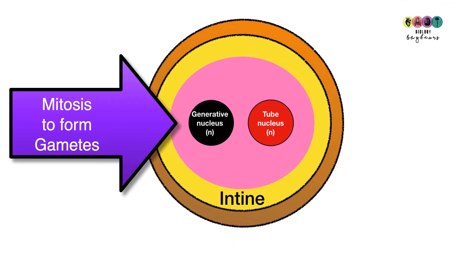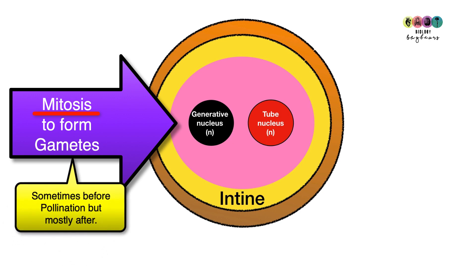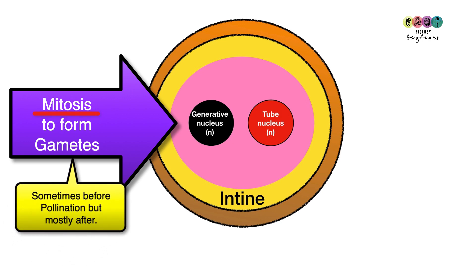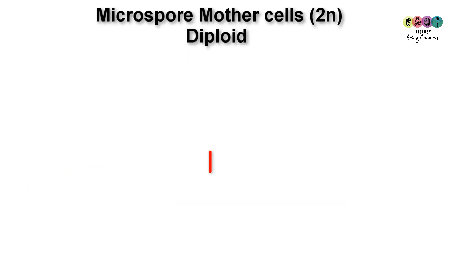It's the generative nucleus inside the pollen grain that will undergo mitosis eventually to form the male gametes — that's really important. This can happen before pollination or after pollination.